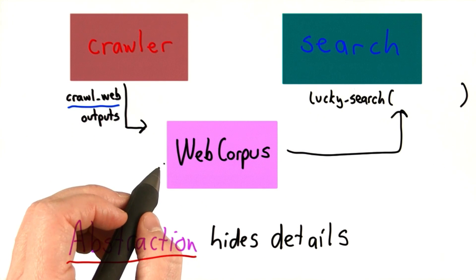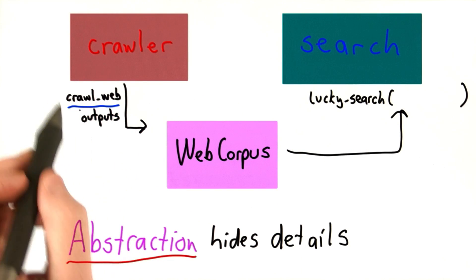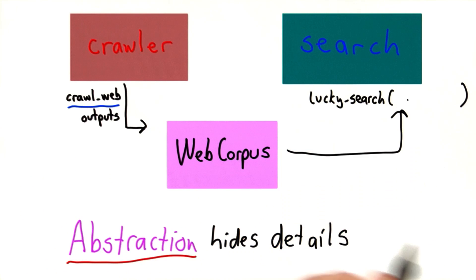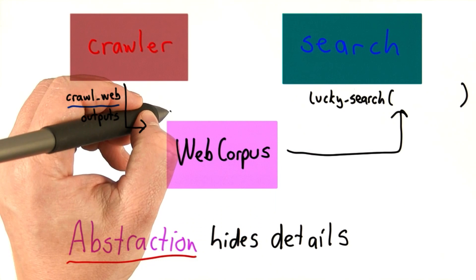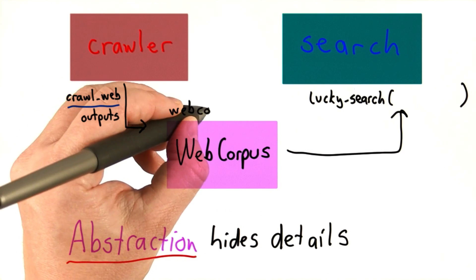We'll call that a web corpus, and that will be the output of the crawler and the input to the search. And we'll end up defining this web corpus object in a new module.